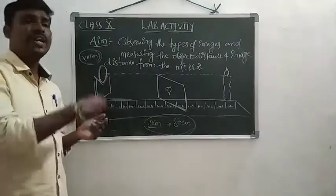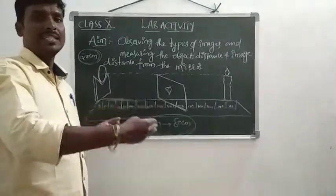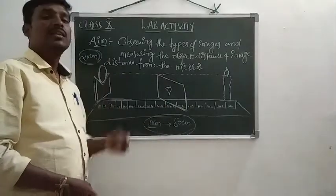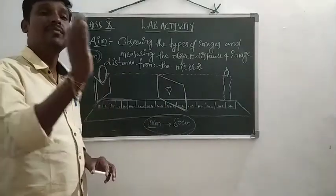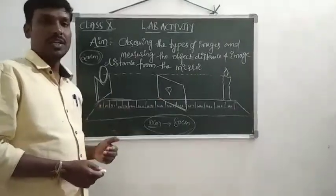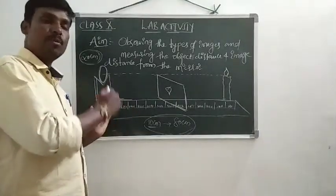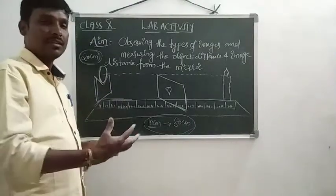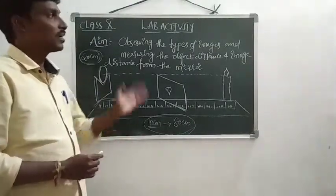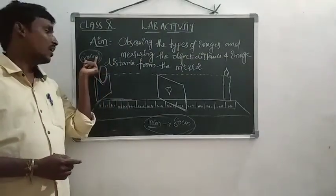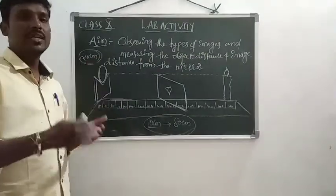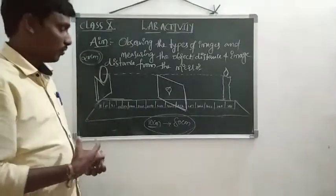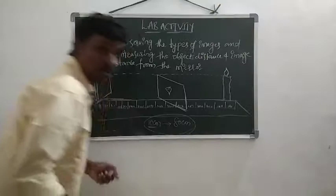Suppose the focal length is 20 centimeters. If we place the candle at 20 cm, the object is at focus. Below 20 cm, the object is between the pole and focus. We will discuss different positions in detail after the lab activity, based on the focal length readings.